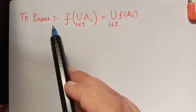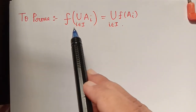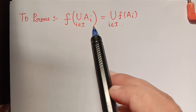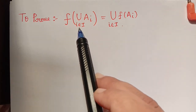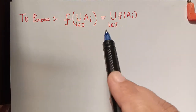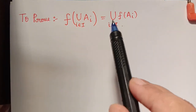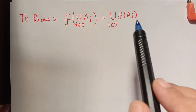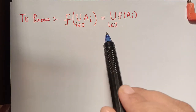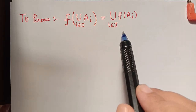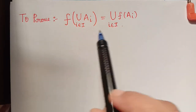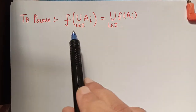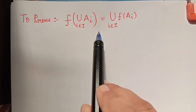We have to prove that f of union of Ai, for i an element of capital I, is equal to union of f of Ai, for i an element of capital I. First, we shall consider the left-hand side for a particular value.